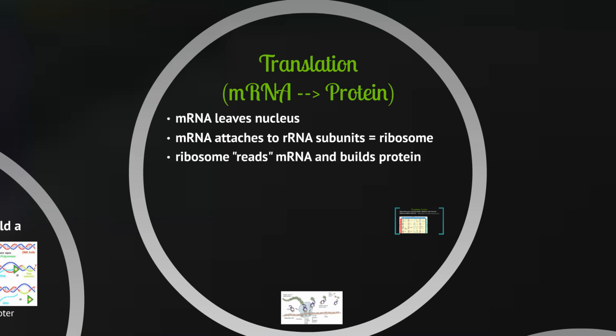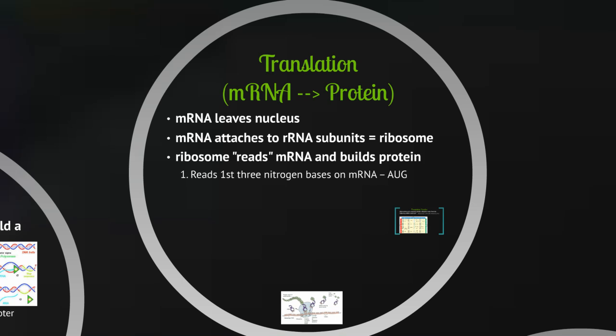The ribosome is going to read the messenger RNA and actually build the protein. Remember, the messenger RNA has codons on it, and that's the code that will indicate the order of amino acids. It's going to start by reading the first three nitrogen bases on the messenger RNA, and those first three are always going to be AUG.